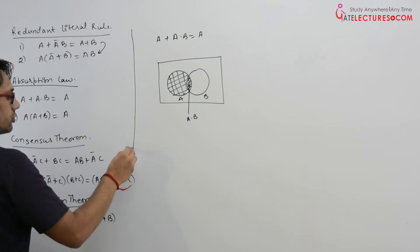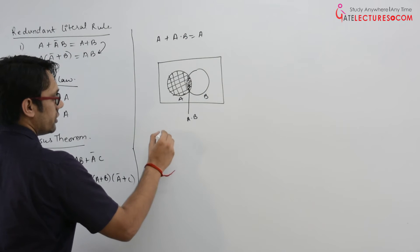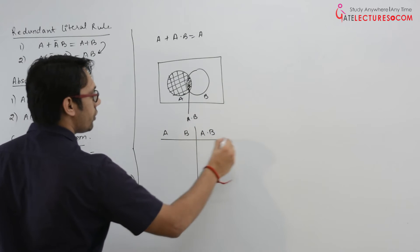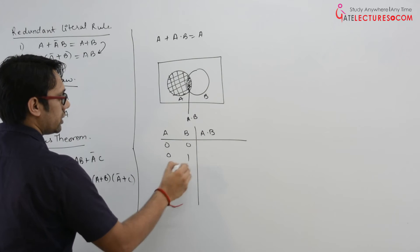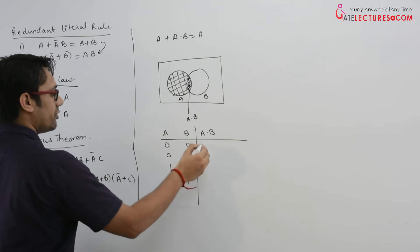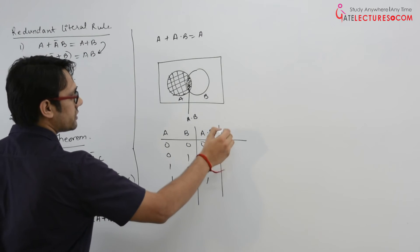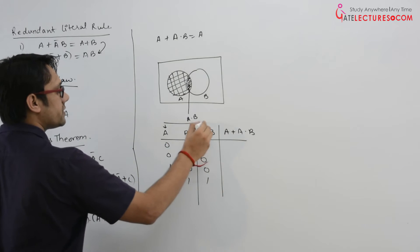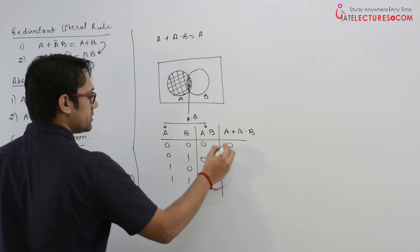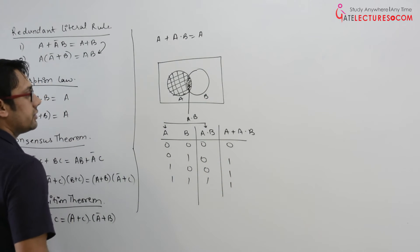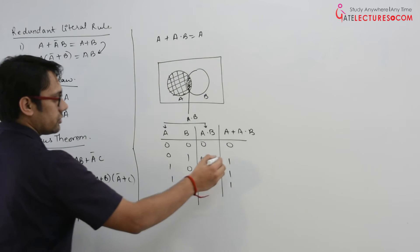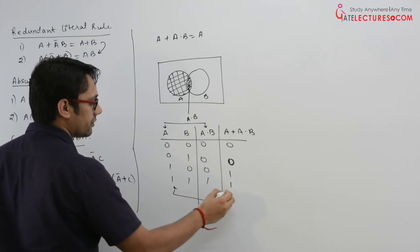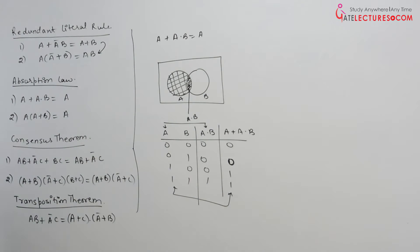Let us prove it using the truth table. We have A and B, and A dot B. The combinations are 00, 01, 10, 11. A dot B is 0, 0, 0, 1. A plus A dot B means OR between A and A dot B, giving 0, 0, 1, 1 — which is actually equivalent to A itself. So we can say the absorption law holds in this case.